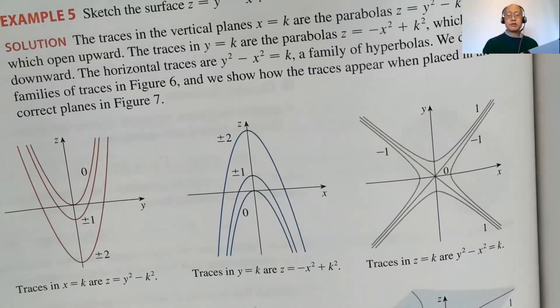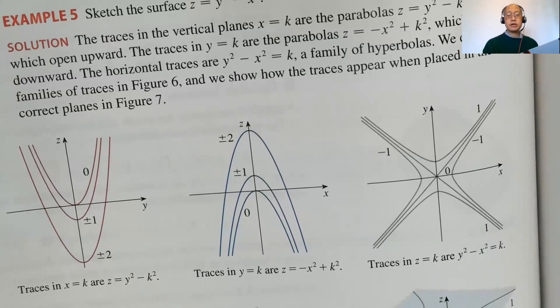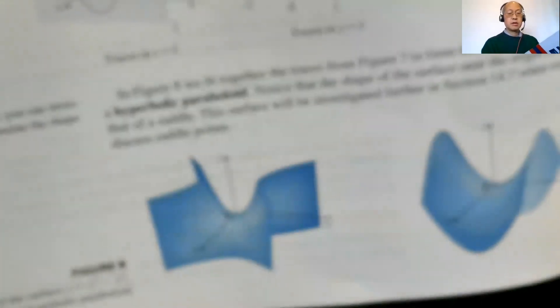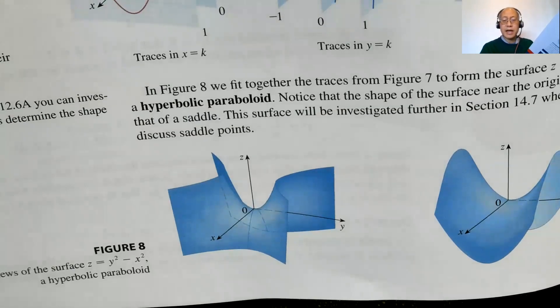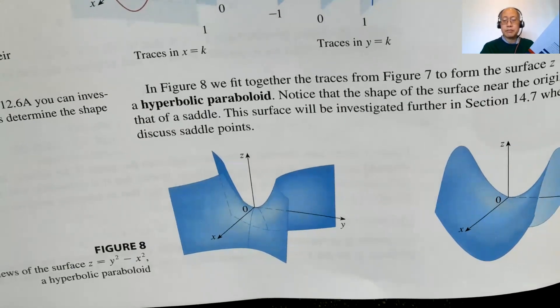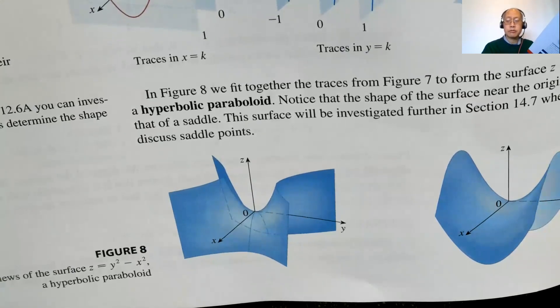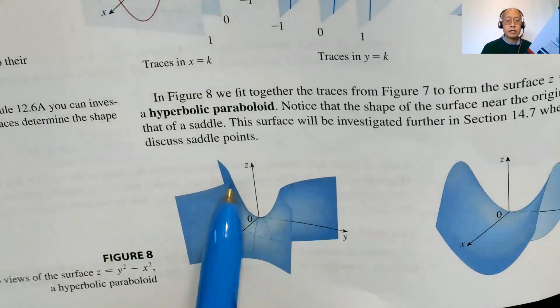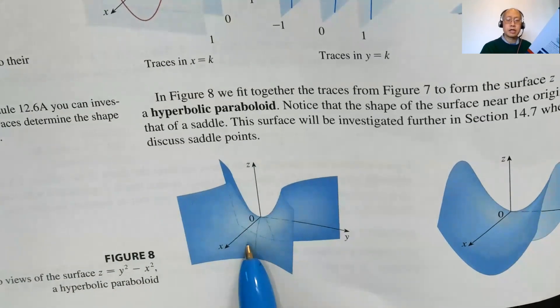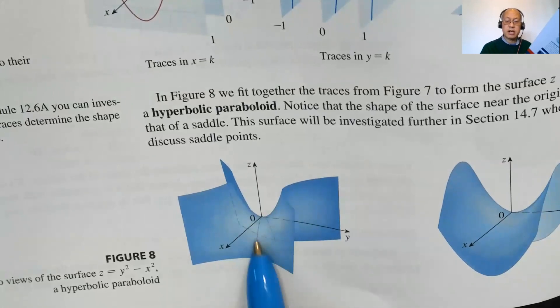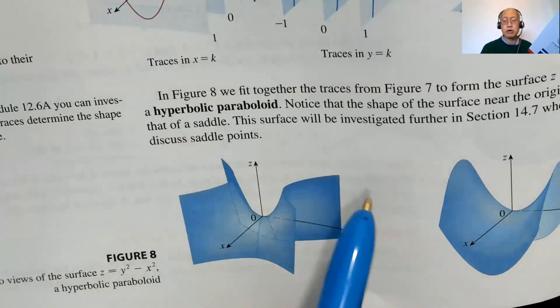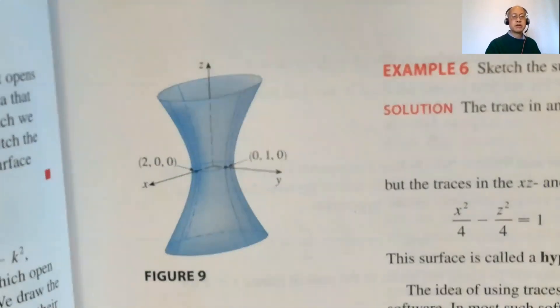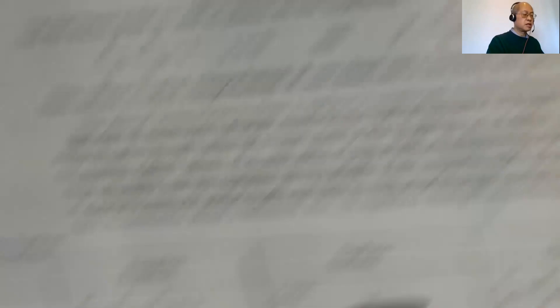We're comfortable with two dimensions: Y versus Z, X versus Z, or X versus Y. We'll just trace in two dimensions. There's a nice figure — a saddle shape where the origin is called a saddle point, because it's a maximum in one direction and a minimum in the other. We'll talk more about that another time.